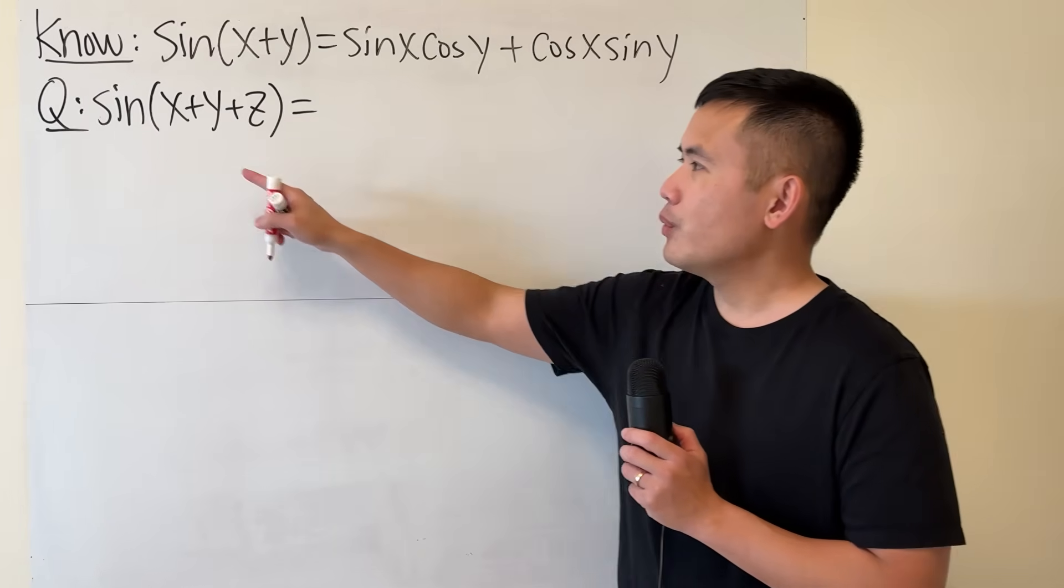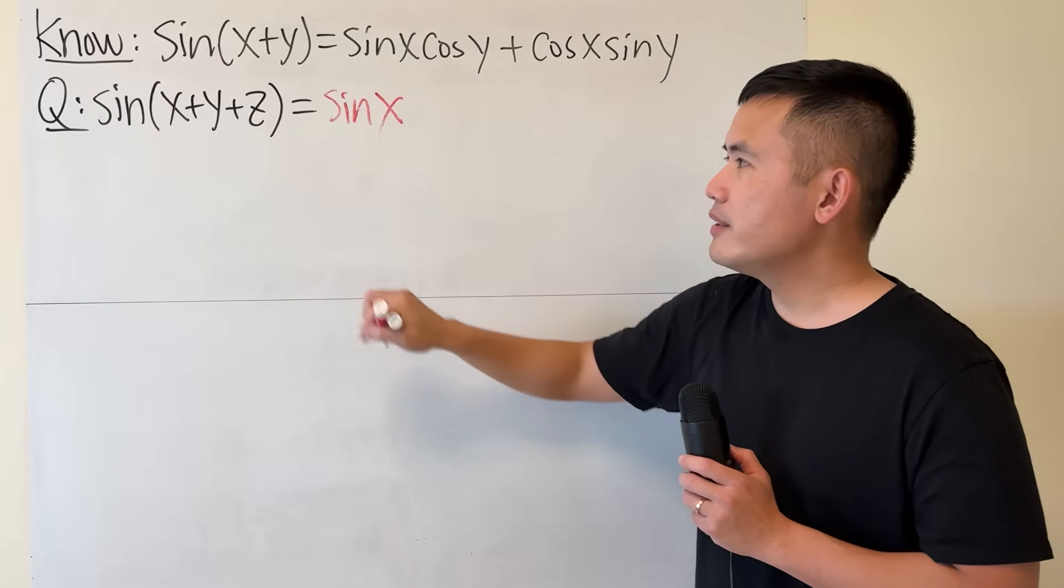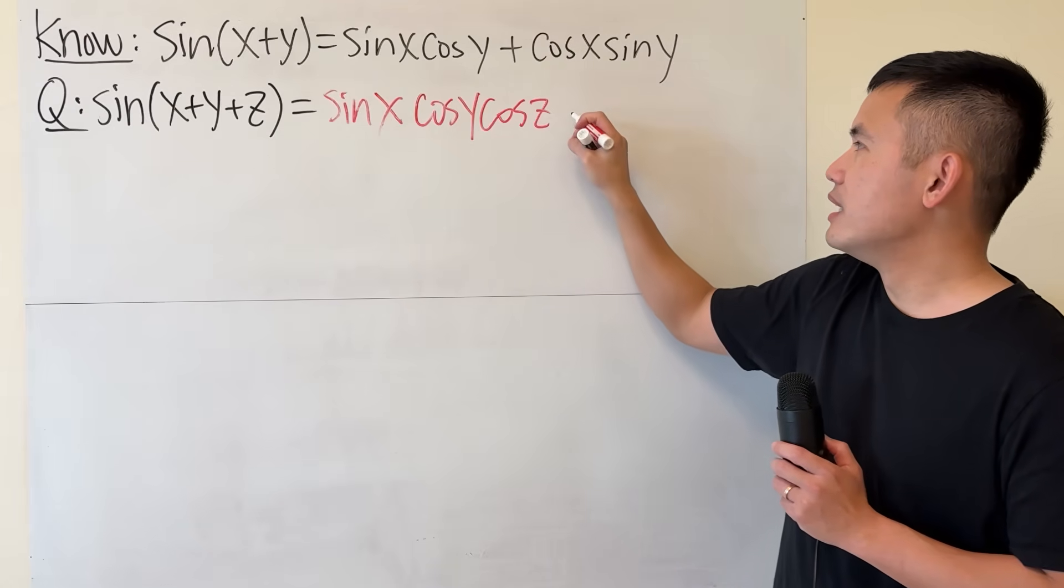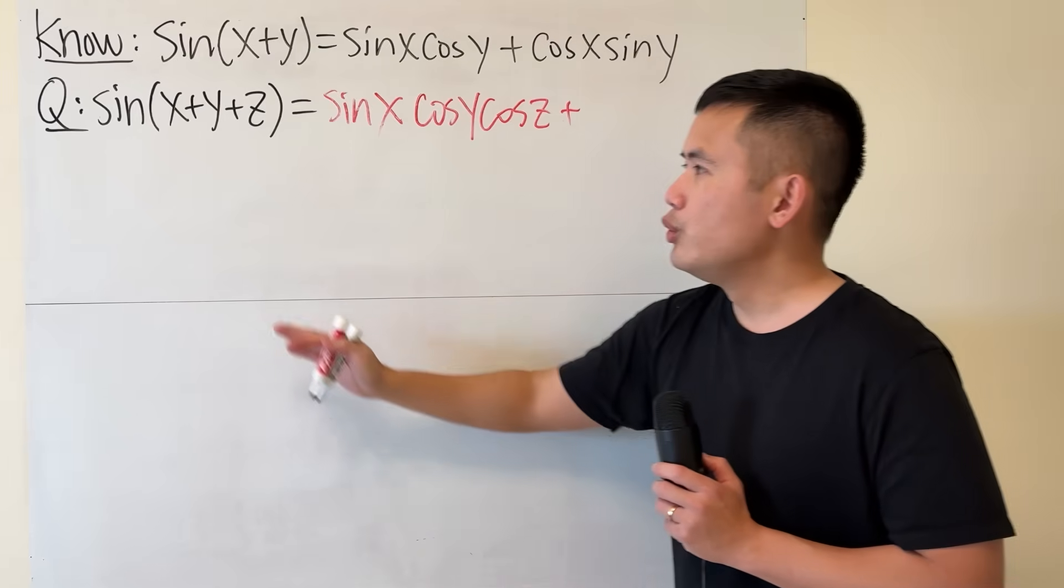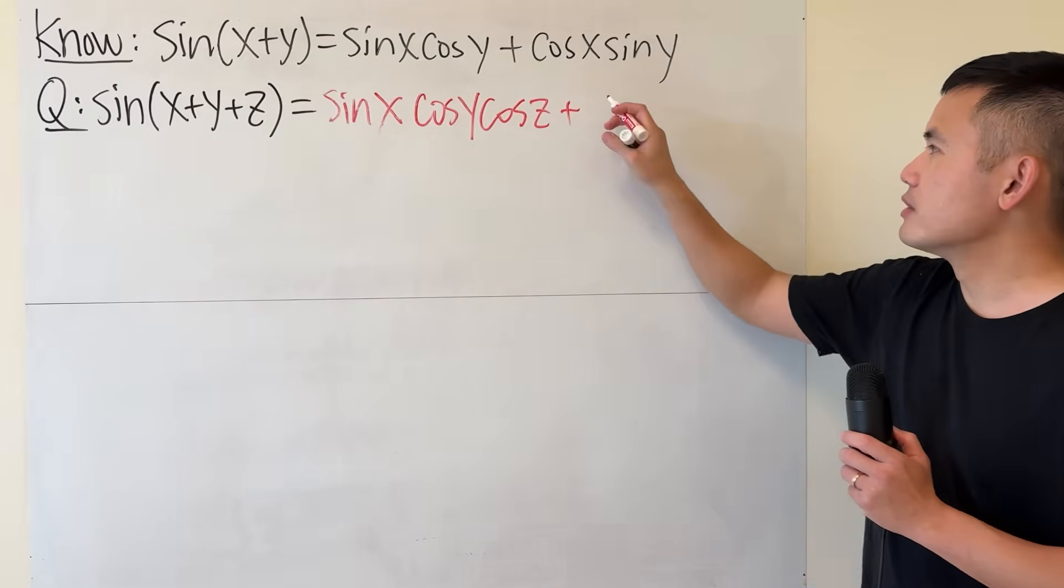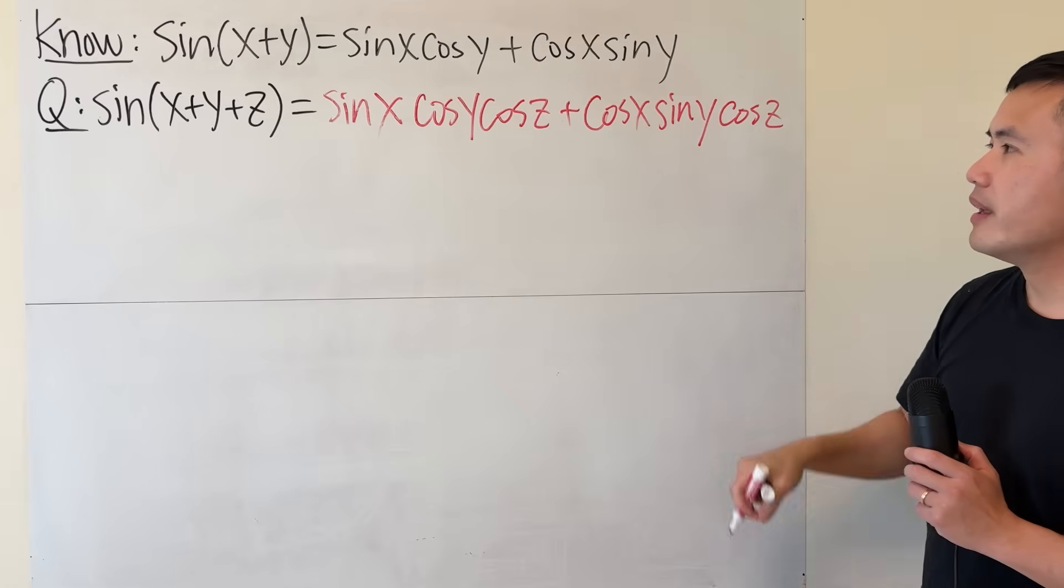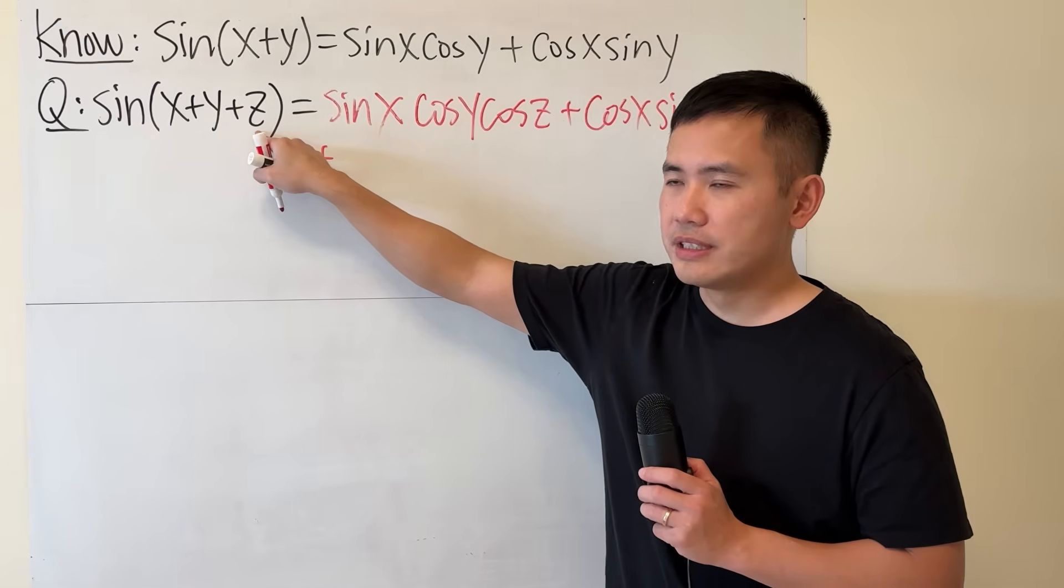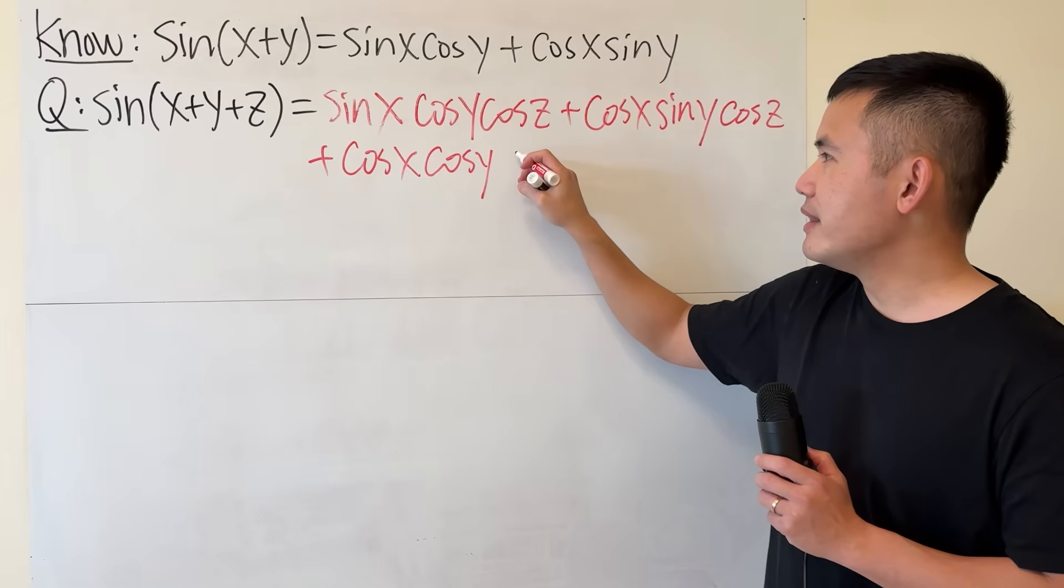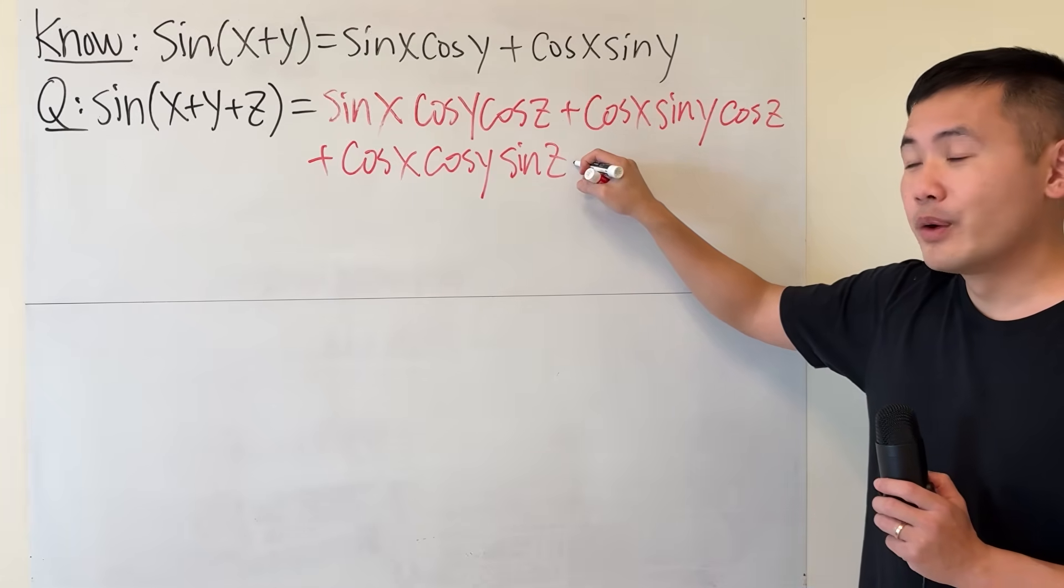What we'll do is we keep the sine of the first, so sine x, and then for the y and z you just make them cosine, so you have cosine y cosine z. Then you pretty much do the same thing for the next one. You have sine for the y, and then for x and z they have the cosine, so this is cosine x sine y and then cosine z. And then we do the same thing but you do sine of z and the cosine of the first two, cosine x cosine y and then sine z.